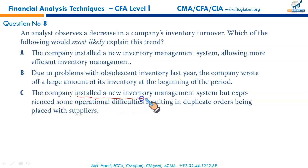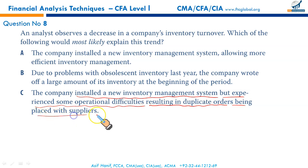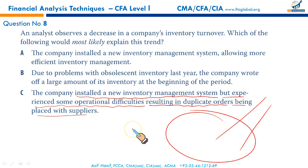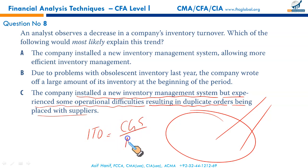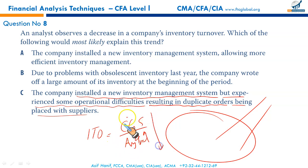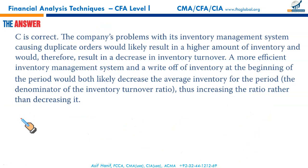Option C: the company installed a new inventory management system but experienced operational difficulties resulting in duplicate orders being placed with suppliers. Duplicate orders swell up inventory, which takes more space and more carrying cost. Since inventory turnover equals cost of goods sold divided by average inventory, the swelled-up denominator causes the ratio to fall. This is a valid, plausible reason why inventory turnover has fallen. C is the right answer.